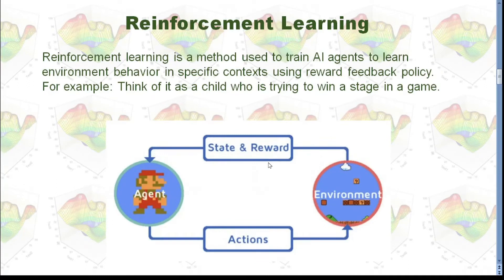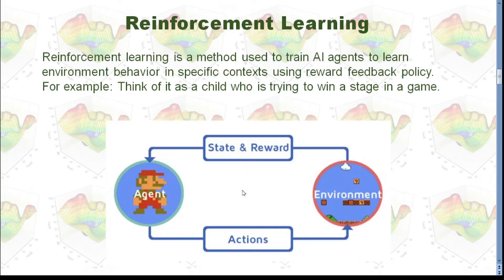Then we have reinforcement learning. In reinforcement learning, we have an agent, and the agent will take certain actions in the environment. The state of the agent will change, and based on the actions of the agent, we will have reward or punishment. This is like playing a video game — you take certain actions, and if you have a good action you will get a point; otherwise, your point will be deducted.